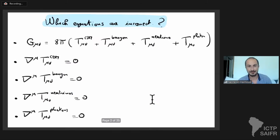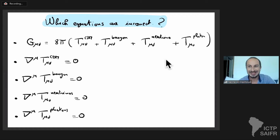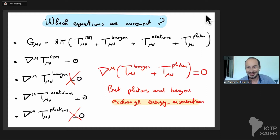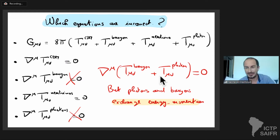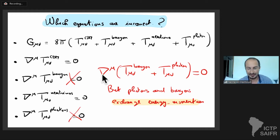Let me start by asking a question I asked last time: which one of these equations is incorrect? Two of these equations are incorrect — this is something that even many professors get wrong. The stress-energy tensor of baryons and the stress-energy tensor of photons are not separately conserved. The total stress-energy tensor of baryons and photons is conserved, however baryons and photons exchange momentum and energy, and that's a very key aspect of CMB anisotropies. CMB anisotropies are really regulated by Thompson scattering, which makes these two separately not conserved.